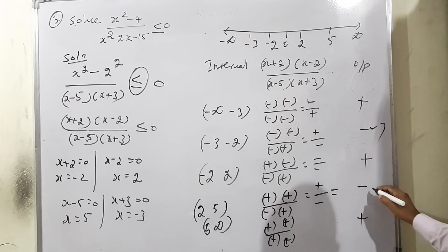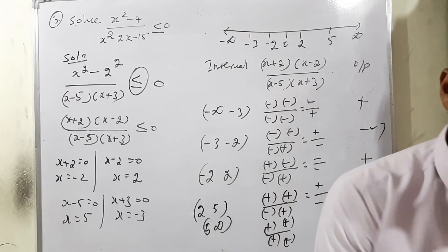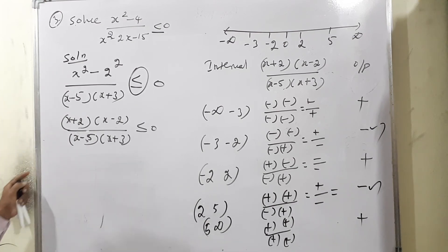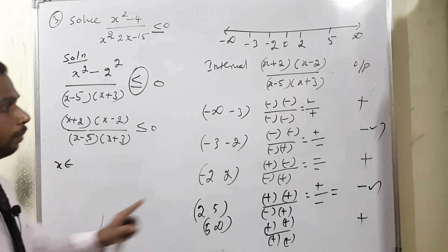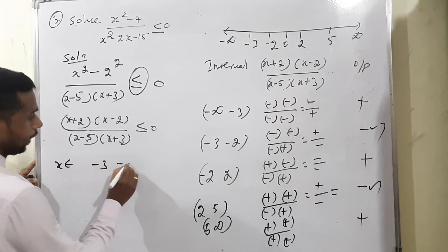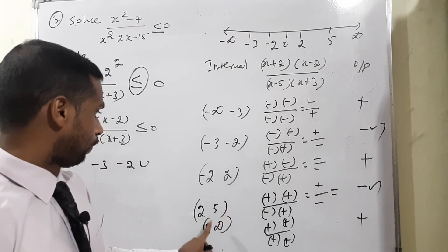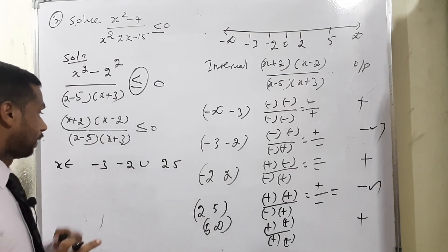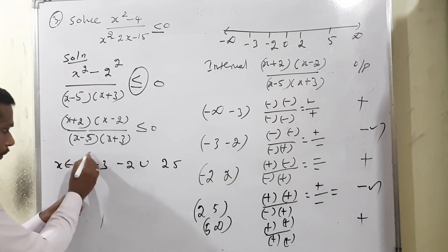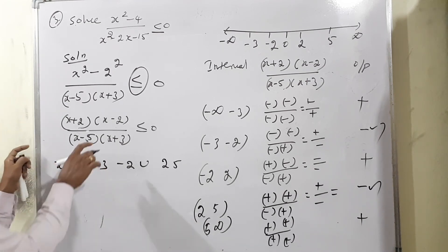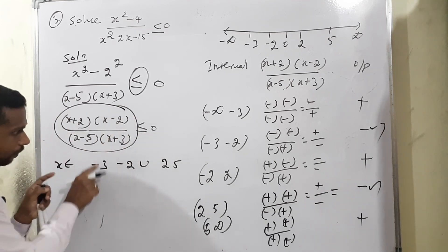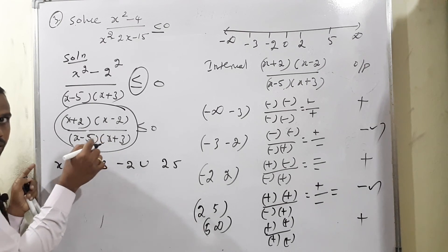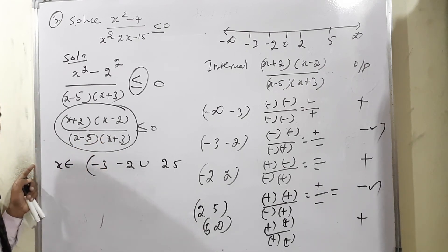Since condition is ≤ 0, we need negative outputs: second interval (-3,-2) and fourth interval (2,5). However, we must be careful with brackets. At x=-3, the denominator is zero (not defined), so open bracket. At x=-2, the numerator is zero giving value 0 which satisfies ≤0, so closed bracket.